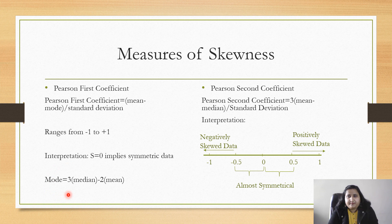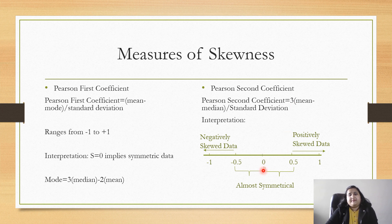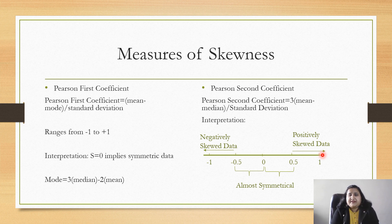If we replace mode using the formula — mode equals three times median minus two times mean — we get Pearson's second coefficient: three times (mean minus median) divided by standard deviation. The interpretation is the same: zero indicates symmetric data, greater than zero is positively skewed. If the value is between zero and 0.5 the data is almost symmetrical, but greater than 0.5 is clearly positively skewed. Similarly, between zero and minus 0.5 is almost symmetrical, but less than minus 0.5 indicates negatively skewed data.